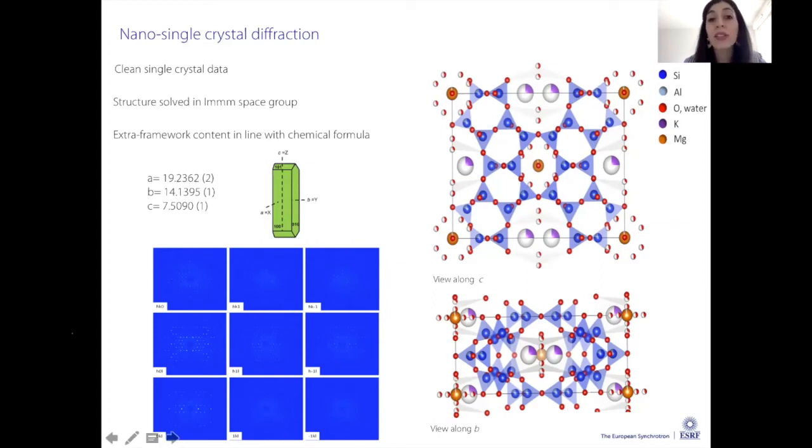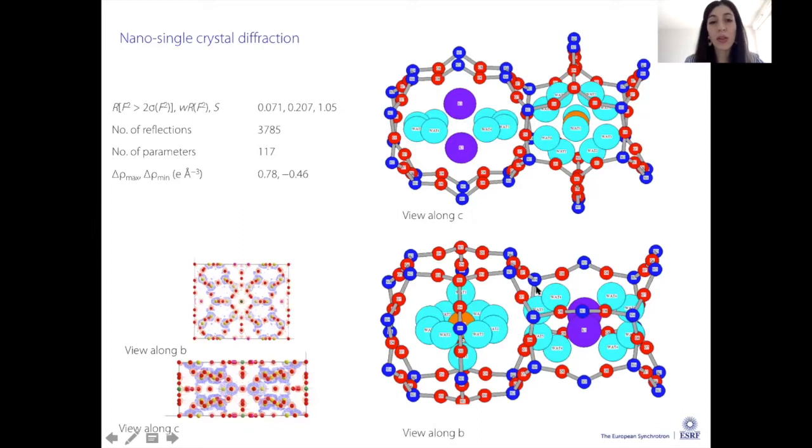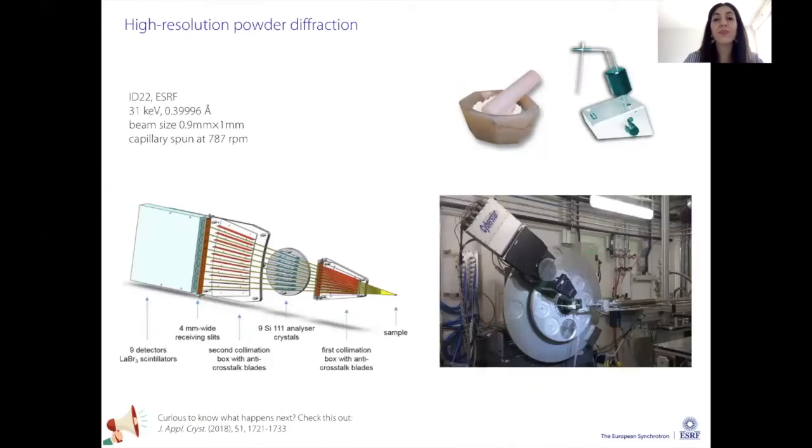By analyzing this data - indexing, extracting intensities, and eventually refining the structure - it turned out I had nice and clean single crystal data. I hope you can see here in these reciprocal space pictures that there are no extra peaks showing the symmetry is lower than Immm. I found extra framework content that was in line with the chemical formula. So basically I could have said okay, I solved my crystal, this is it, I'm happy, it's in line with my chemistry. Here you can see some other details of the refinement and the single crystal extra content.